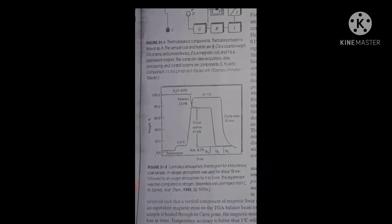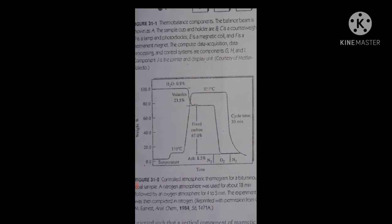If you look at the graph, there are two graphs. In one graph, there are moisture, volatile matter, and fixed carbon. When the sample is giving off its mass, it is decreasing. You can see that it starts from 100 and then comes down to almost 20.